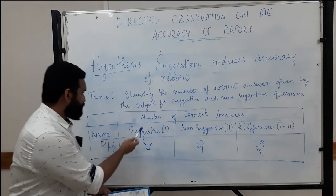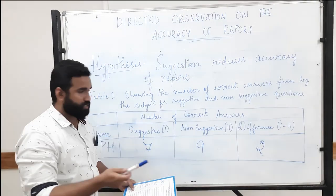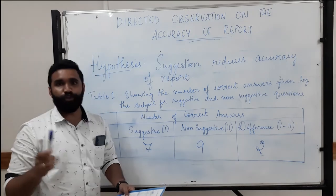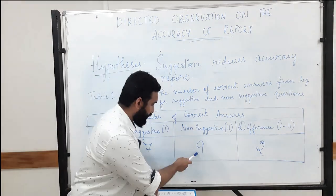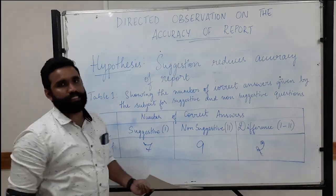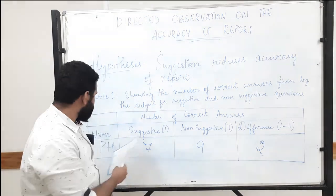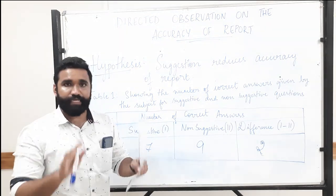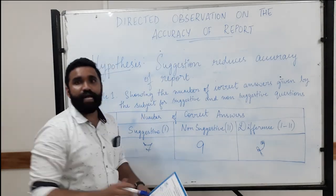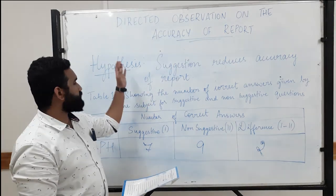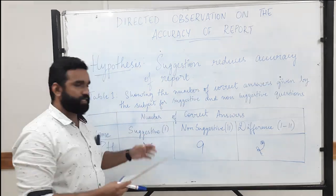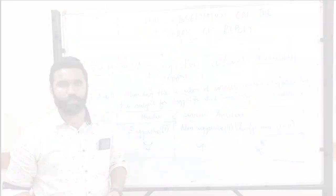For our subject, all the suggested questions gave him a score of seven, and for non-suggested questions he got a score of nine. So the hypothesis is accepted for this particular subject. There can be subjects who score otherwise, in which case we would say the hypothesis has been rejected for that particular subject.